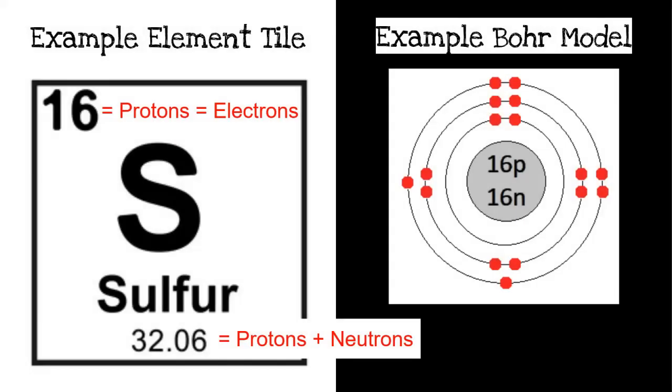Now, how do we go from an element tile to this Bohr model? If we look at that top number, this is another way to see an element tile for sulfur. Sulfur has an atomic number of 16. That means in our Bohr model, we should have 16 protons, so 16p in the middle, and 16 electrons, so 16 red dots in our electron orbitals. 32 tells us protons plus neutrons, so to figure out neutrons, we have to subtract. So 32 minus 16 protons gives us 16 neutrons in our nucleus.